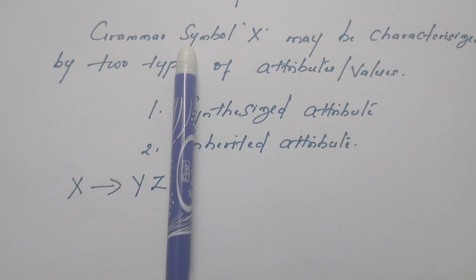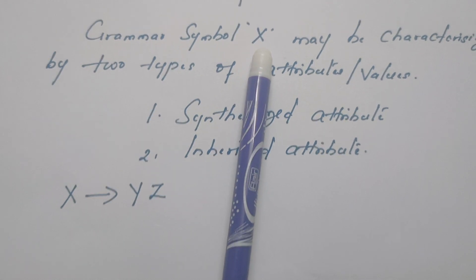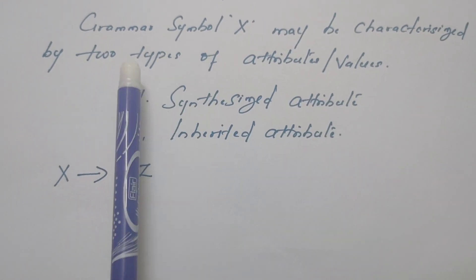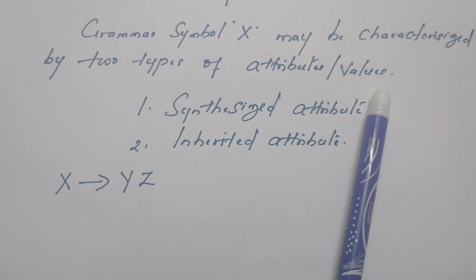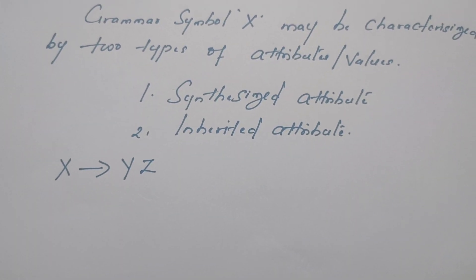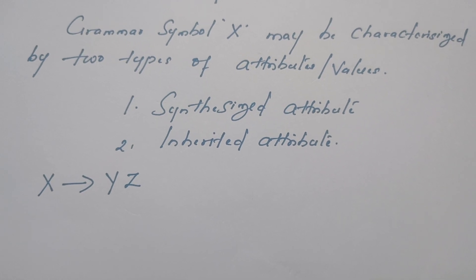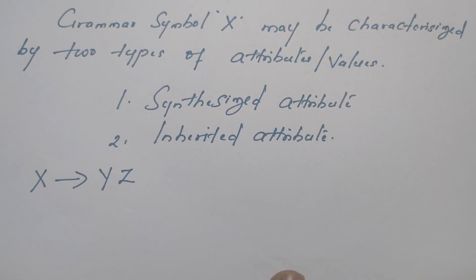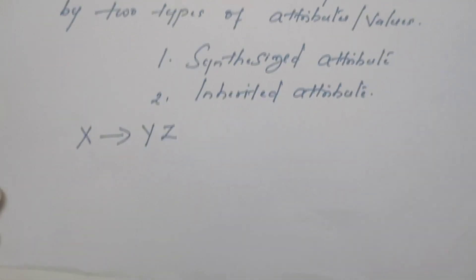Now, in a context-free grammar, if there is a symbol X, it is characterized by two types of attributes. What are those two types? One is synthesized attribute, and another one is inherited attribute. Let us understand what is synthesized and inherited attribute from this given example.